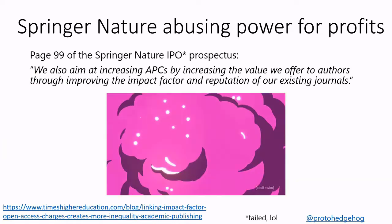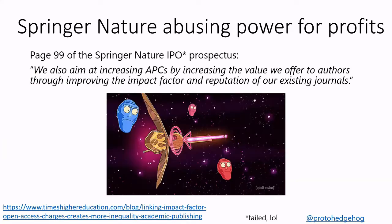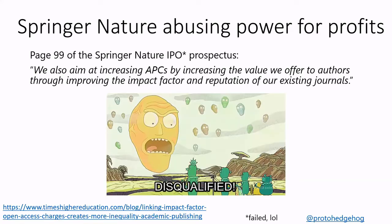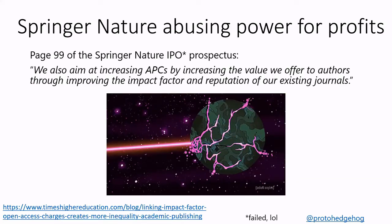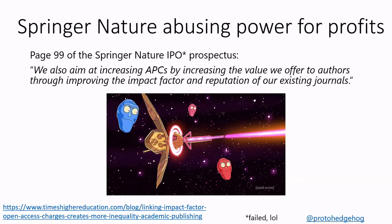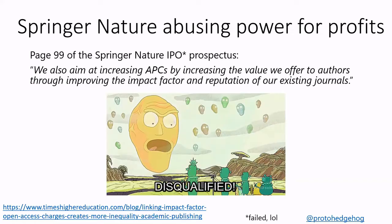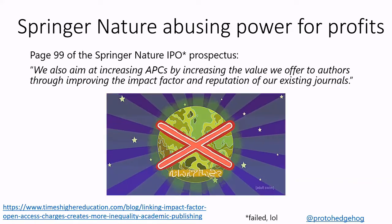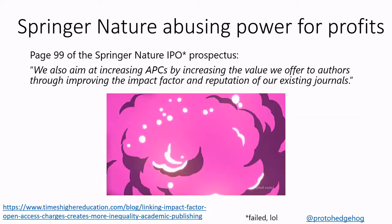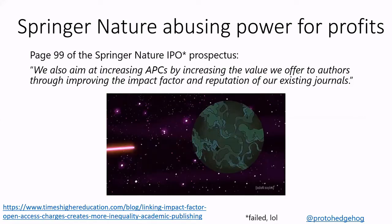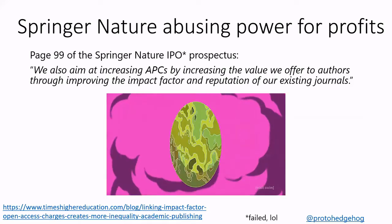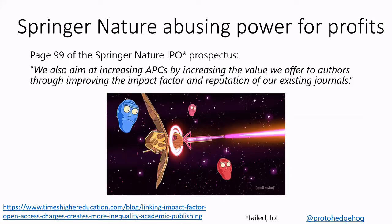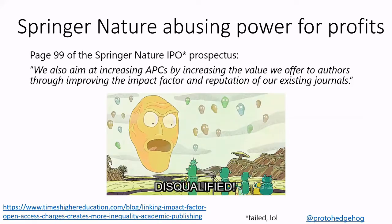One quote that sticks out from the Springer Nature prospectus is: 'We also aim at increasing APCs by increasing the value we offer to authors through improving the impact factor and reputation of our existing journals.' This statement is essentially against everything which the open science community stands for. We don't want increasing APCs; we don't want the impact factor conflated with reputation. When Springer Nature were called out for this, they said, 'You weren't supposed to read that — that was for investors,' and took the prospectus offline. It was an outrageous thing to do.